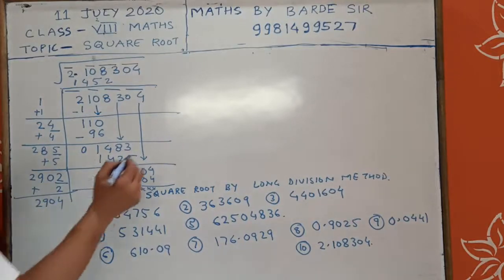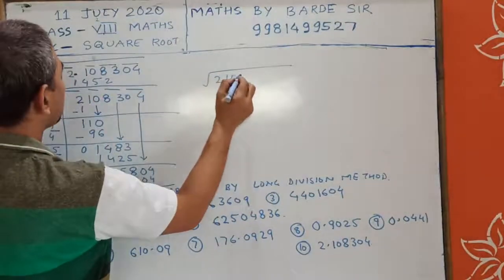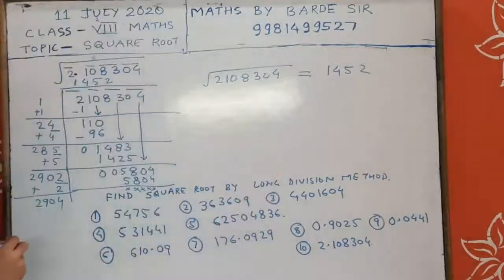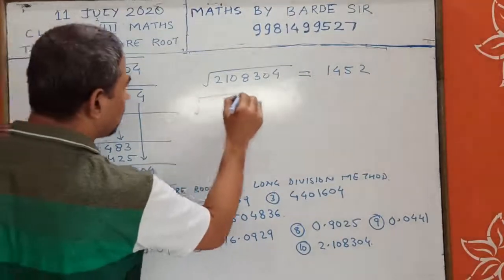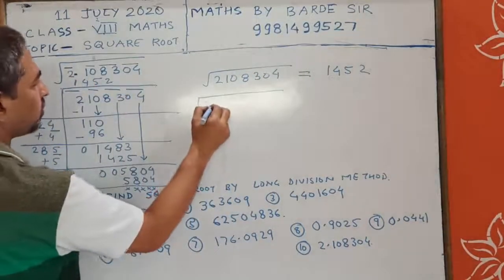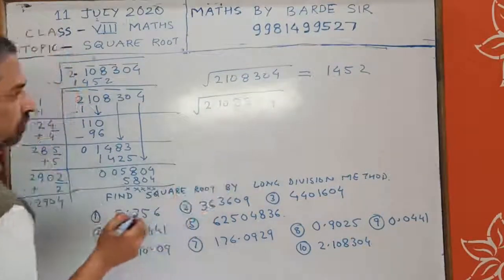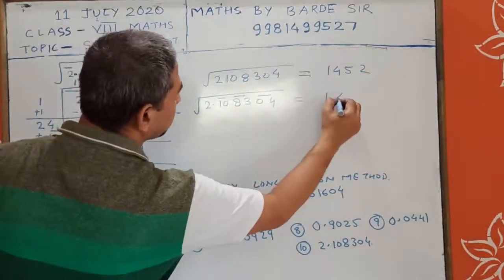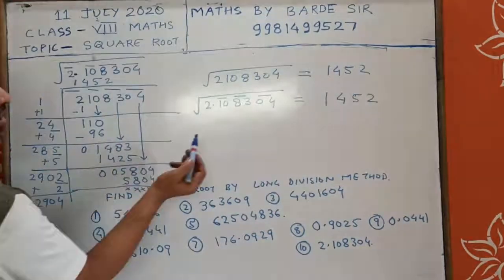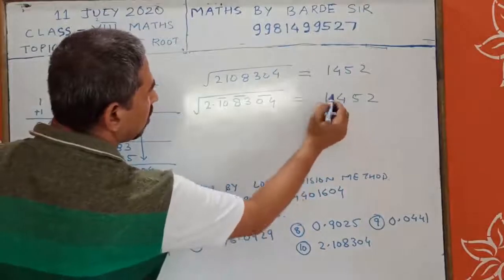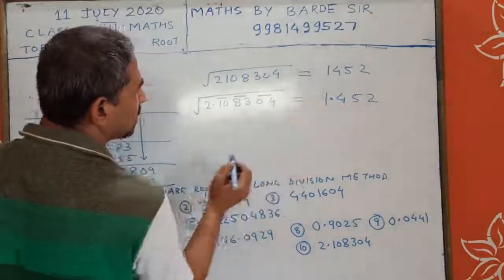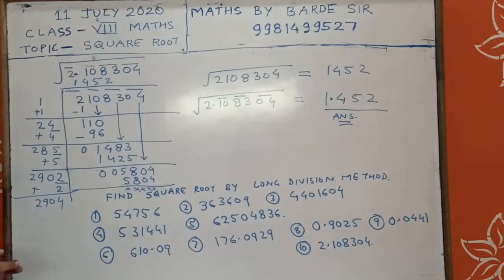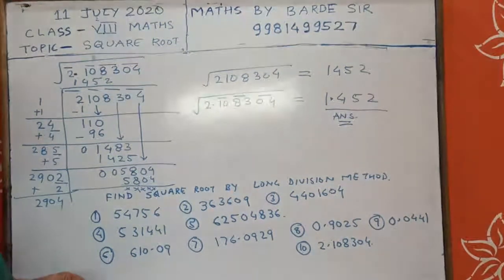We have the square root of 2.108304. The answer is 1.452. Decimal comes after the integer part of the square root. Pairing after the decimal: 1, 2, 3 — there are 3 digits after the decimal, so place the decimal accordingly. The square root of 2.108304 is 1.452. This is how you find the square root of decimal numbers.